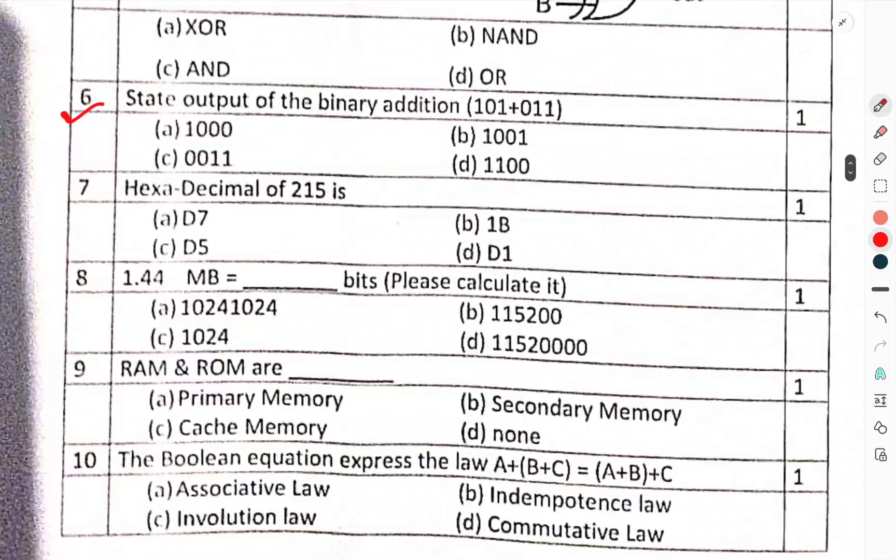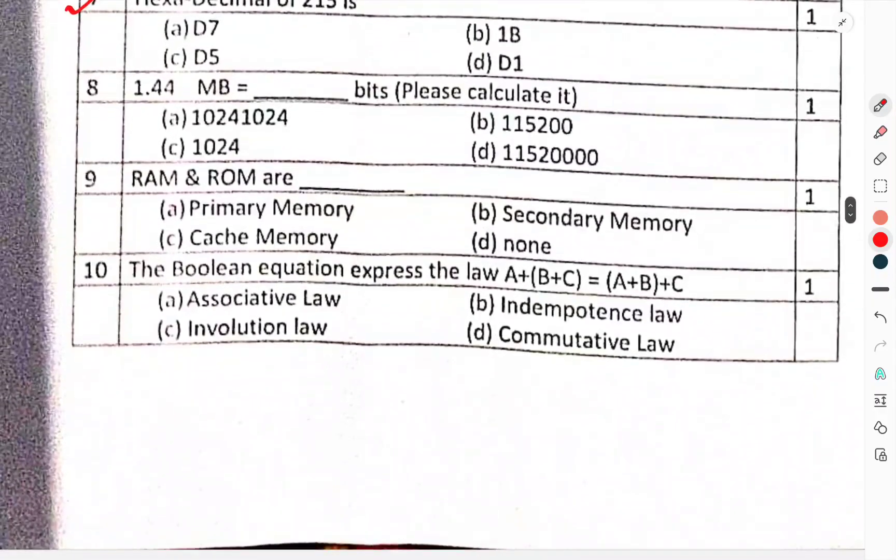Question number 6: State output of the binary addition 101 plus 011. Hexadecimal of 215 is... 1.44 MB bits. Please calculate it.